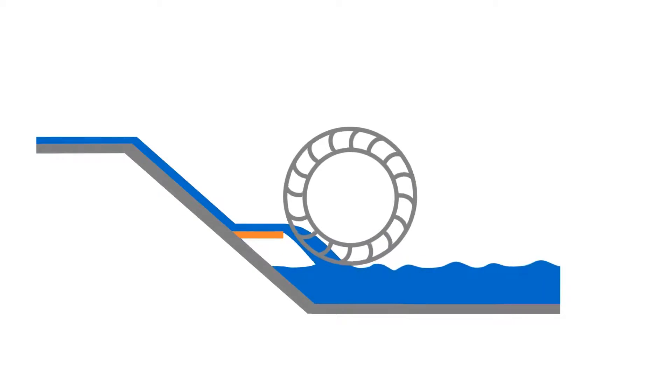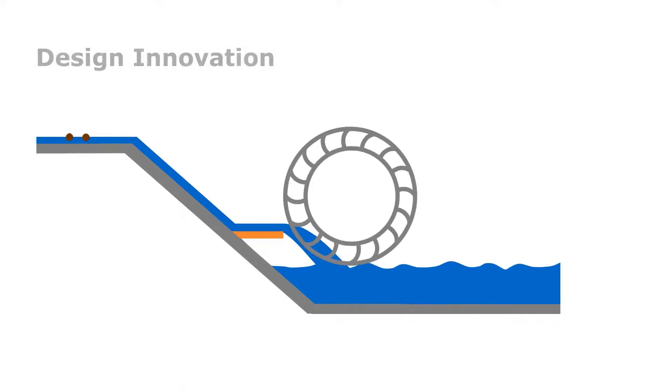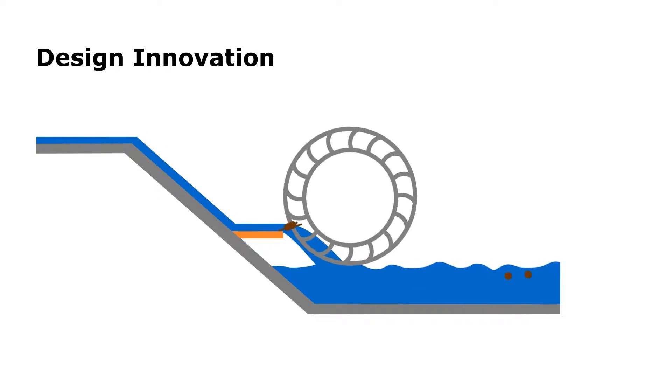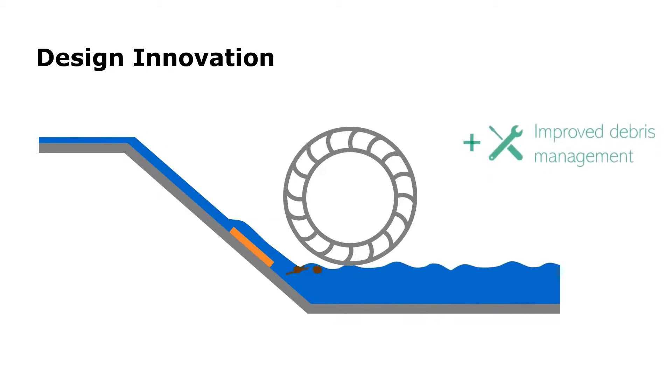Based on an undershot wheel, our innovative design utilises an adjustable ski jump, which diverts all the flow into the blades. The gap between the ramp and the wheel allows debris to pass, but it can also be lowered for jams and maintenance.